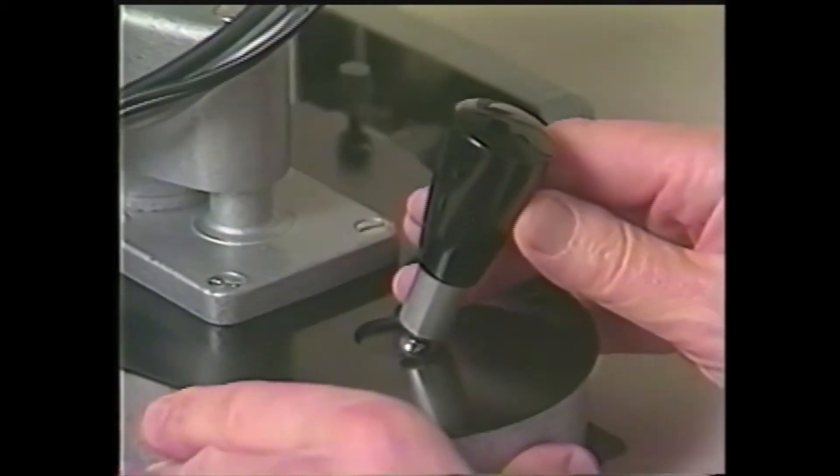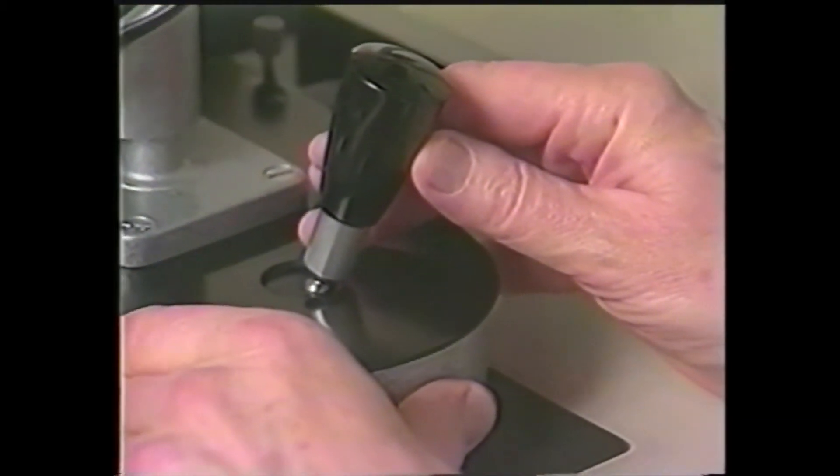Gently move the slit lamp carriage with both hands towards the eye. If the patient withdraws, have them look down and gently lift their eyelid and hold it against the brow. Guide the tonometer and slit lamp carriage with your free hand to almost touch the eye.